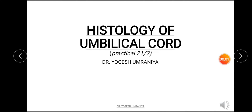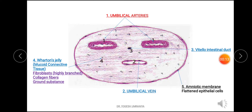Today we are going to discuss the histology of the umbilical cord — practical number 21, topic number 2. The umbilical cord is a tube-like structure connecting the placenta with the fetus. Its main function is to provide oxygenated blood to the fetus as well as to remove the deoxygenated blood from the fetus.